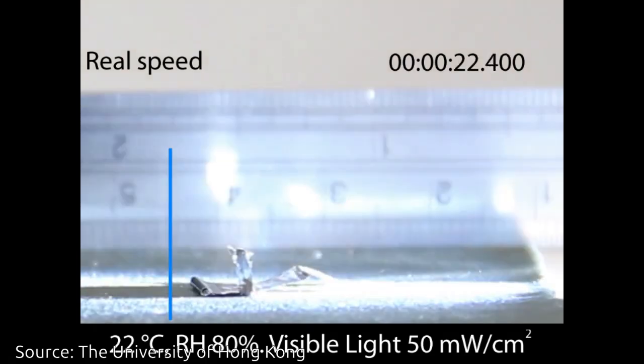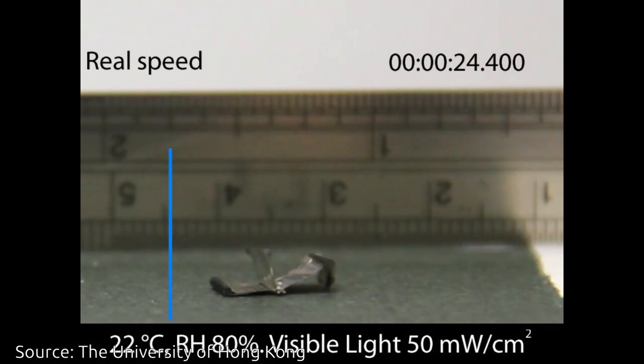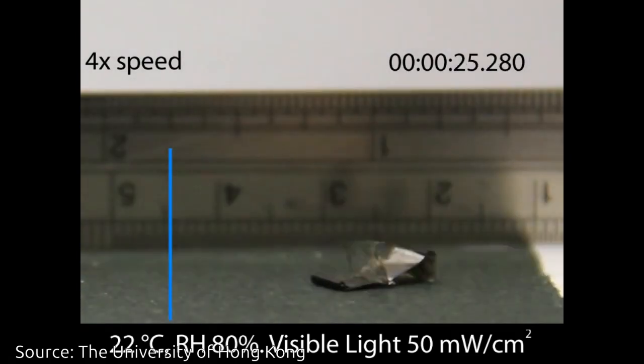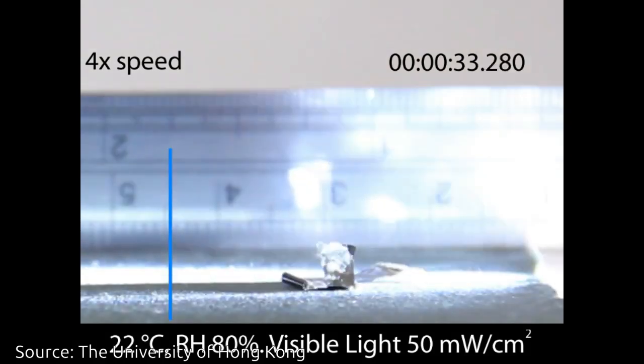The novel actuating material system that can be actuated by visible light at relatively low intensity to produce high stress and speed comparable to mammalian skeletal muscles has been developed in this research.